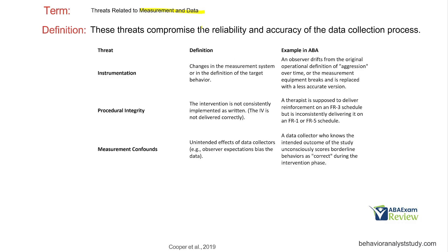Measurement and data threats compromise the reliability and accuracy of the data collection process. Instrumentation refers to changes in the measurement system or the definition of the target behavior — for example, an observer drifts from the original definition of aggression, or measurement equipment is replaced with a less accurate version. Procedural integrity: the intervention is not consistently implemented as written. For instance, a therapist is supposed to deliver reinforcement on an FR-3 schedule but is instead doing FR-1 or FR-5 — the integrity is not good in that experiment.